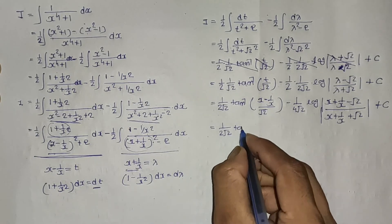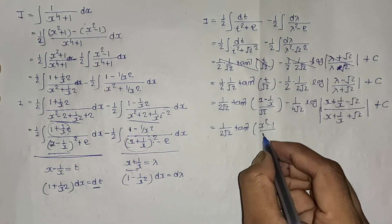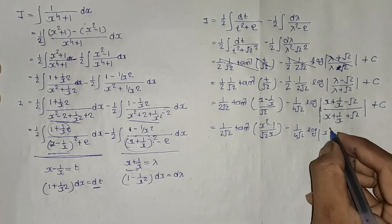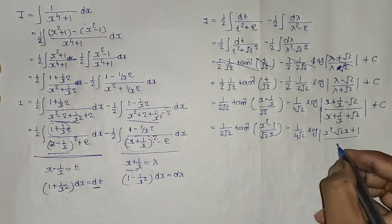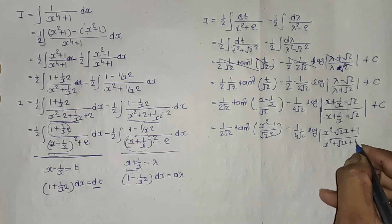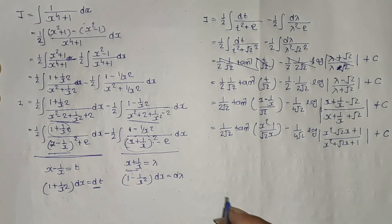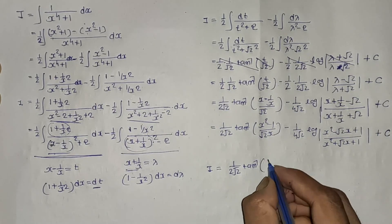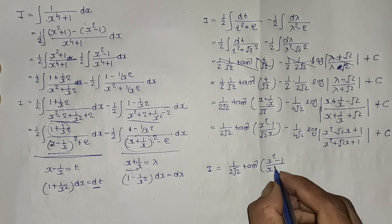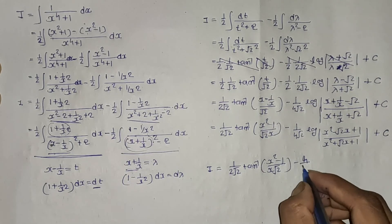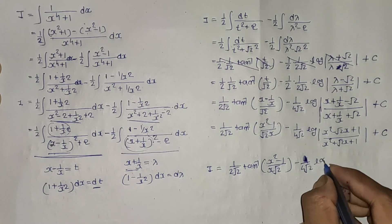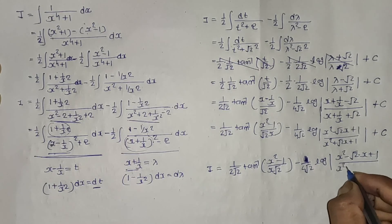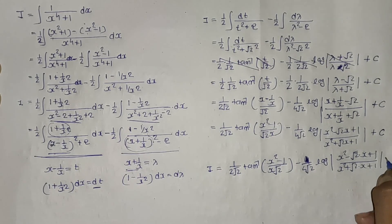The final answer is I = (1/(2√2))·tan⁻¹((x² - 1)/(√2·x)) minus (1/(4√2))·log|(x² - √2·x + 1)/(x² + √2·x + 1)| + C.